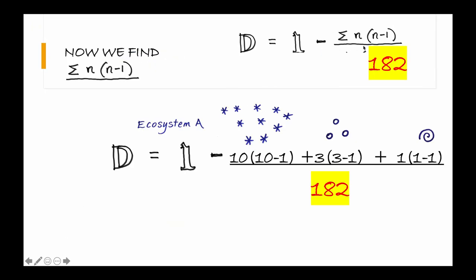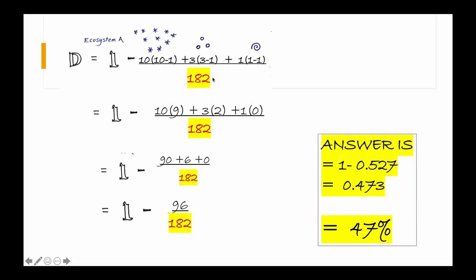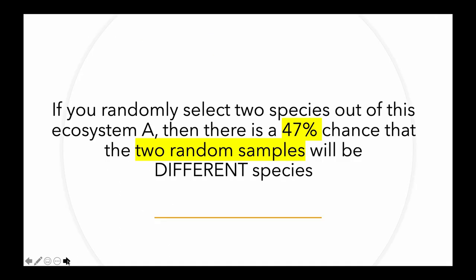For the numerator, there are 10 stars, so the first term is 10(10−1). There are 3 circles, giving us 3(3−1). And there is only 1 swirl, giving us 1(1−1). Working this out, our answer is 0.473 — meaning there is a 47% chance that if you randomly select two organisms from Ecosystem A, they will be different species.